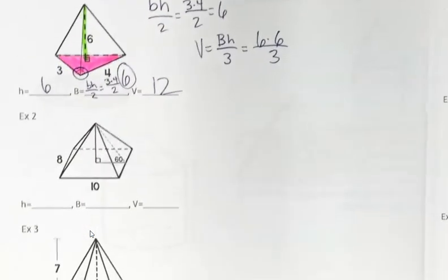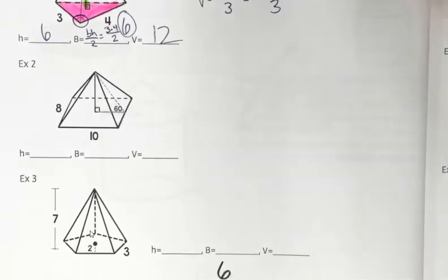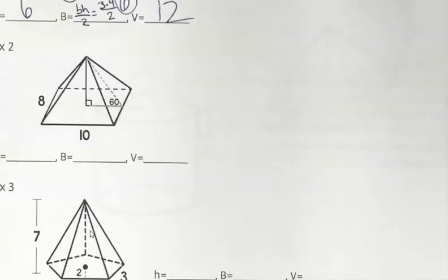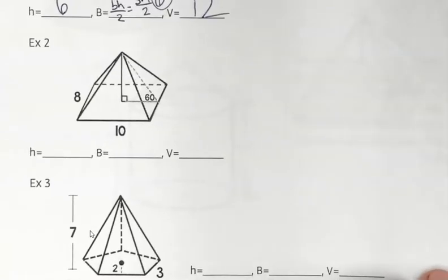And then our volume would be capital B times H divided by three. So I can plug those in. Six times six divided by three. Grab my calculator. Six times six divided by three is 12. That's what our volume is going to be. All right. And then we are going to move on to this next example.